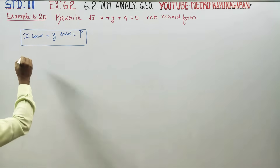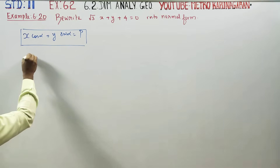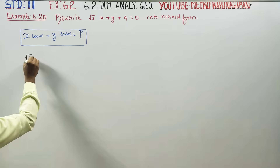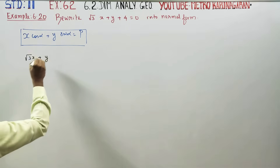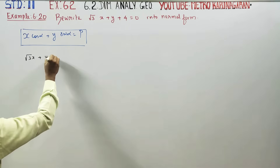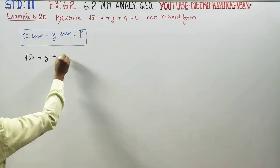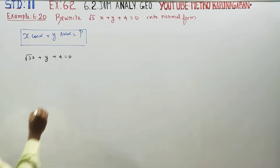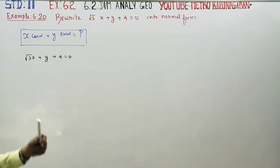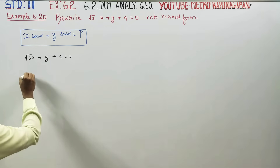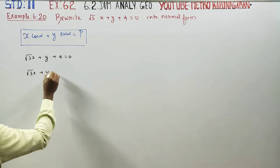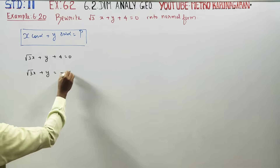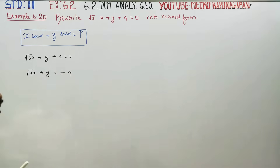First stage: the equation is √3·x + y + 4 = 0. Rearranging, we get √3·x + y = −4.